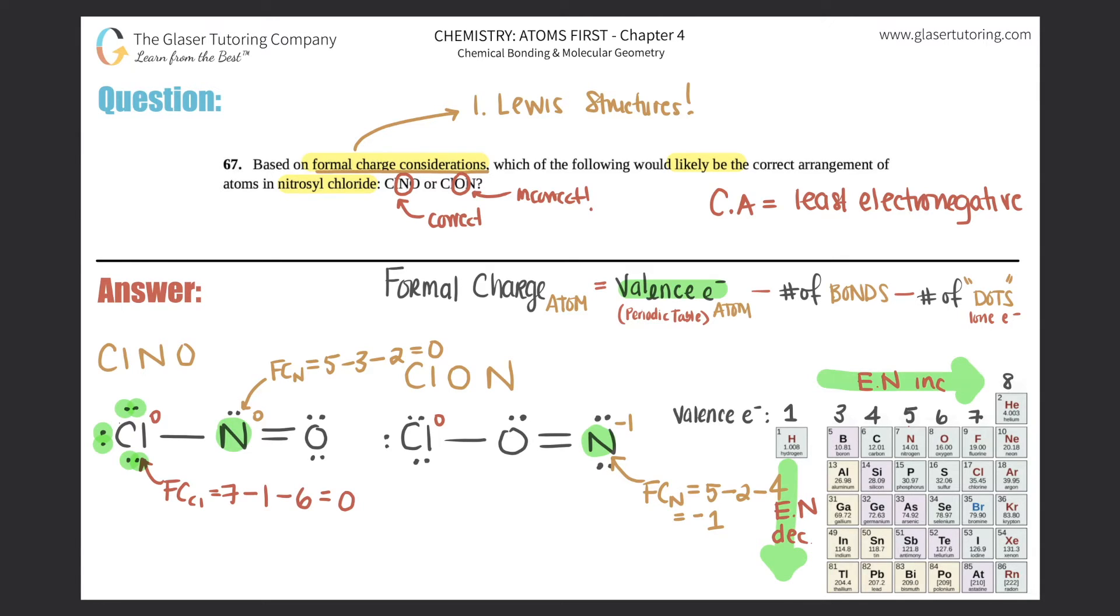So this would have a negative one charge in the upper right-hand corner. Okay. So I can already start seeing discrepancies here. We have both neutral atoms here, but then we have a negative one. So the more charges, not good.